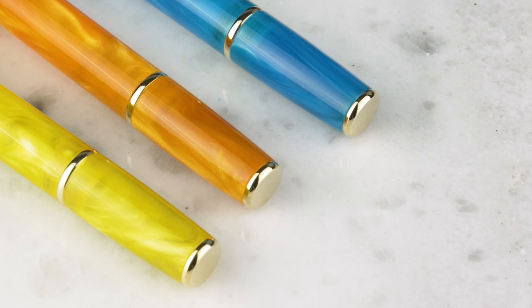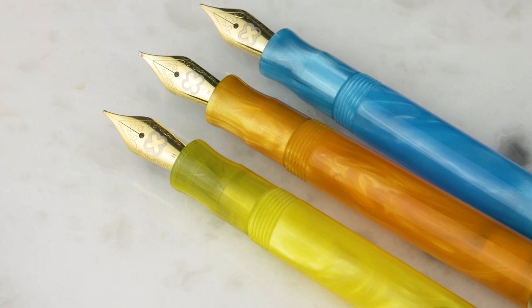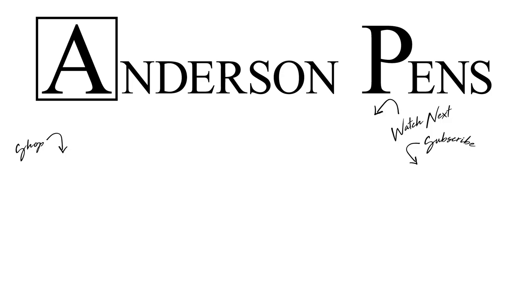Very pretty. So Esterbrook JR, available in three colors, and then of course, we do have the other three, the three previous colors in the lineup as well. The blue, the black, and the red.